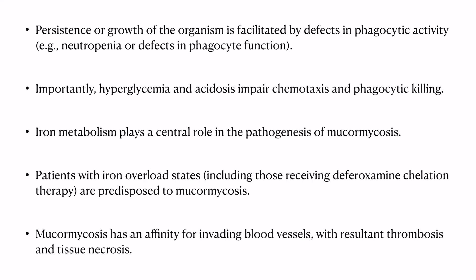Persistence or growth of the organism is facilitated when there is a defect in phagocytic activity. This can be facilitated by hyperglycemia or acidosis, which impair chemotaxis and phagocytic killing. Iron metabolism plays a central role in the pathogenesis — patients with higher levels of iron are predisposed to develop mucormycosis. Mucormycosis has an affinity for invading blood vessels, resulting in thrombosis and tissue necrosis, which appears as the black eschar.